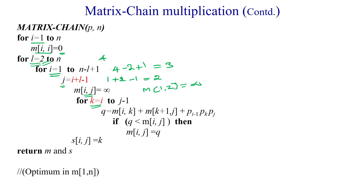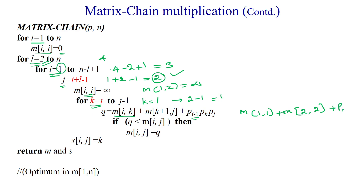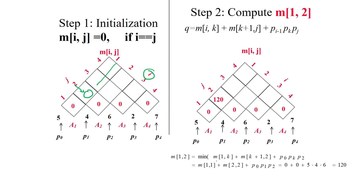We calculate q = m[i,k] + m[k+1,j] + p[i−1]·p[k]·p[j]. With k=1: m[1,1] + m[2,2] + p[0]·p[1]·p[2]. We substitute the values: m[1,1]=0, m[2,2]=0, then p[0]=5, p[1]=4, p[2]=6, giving us 120.